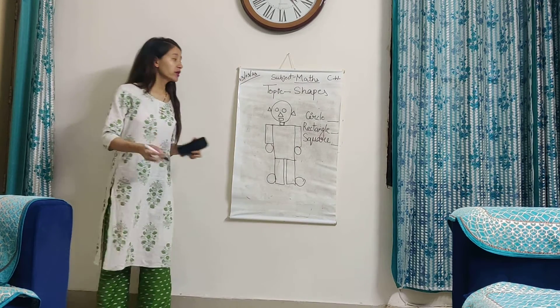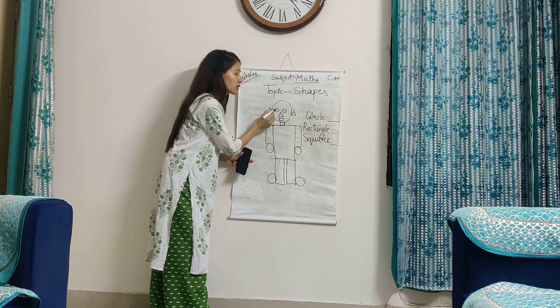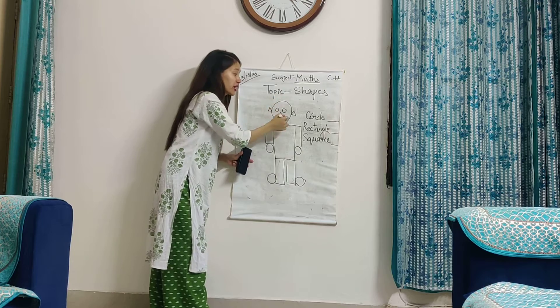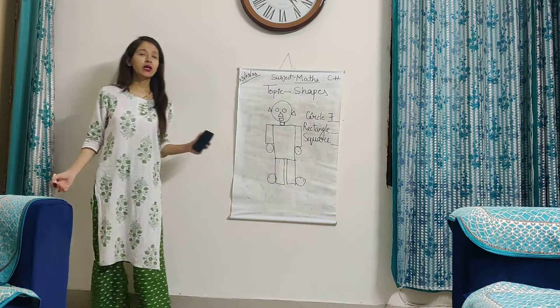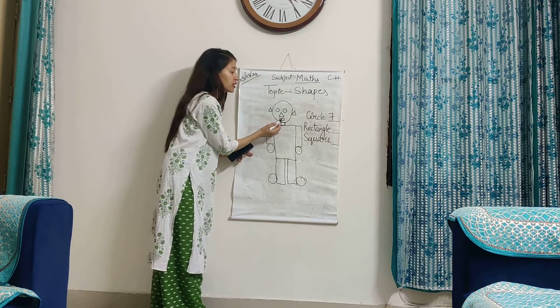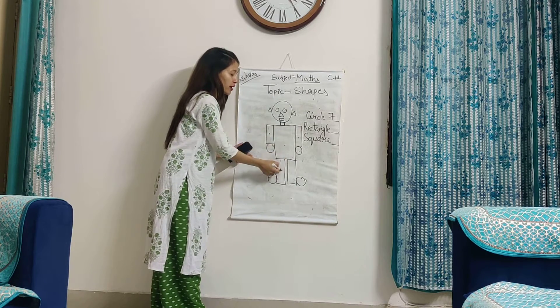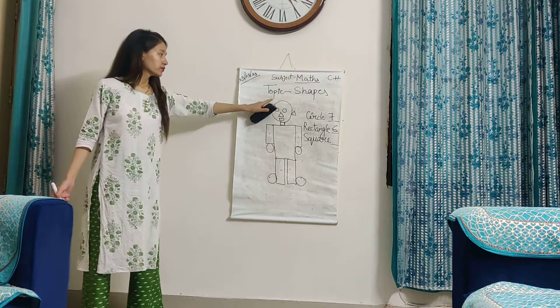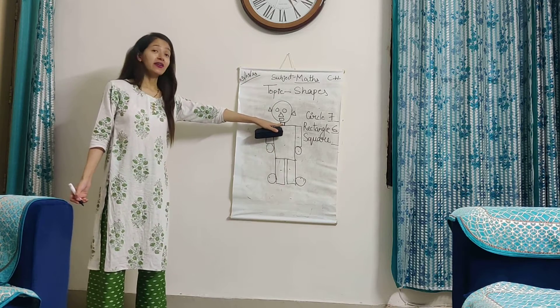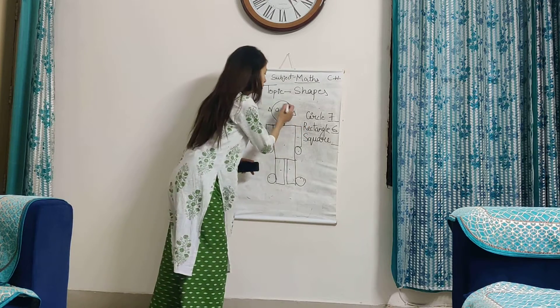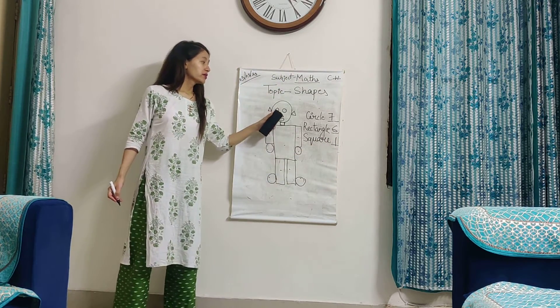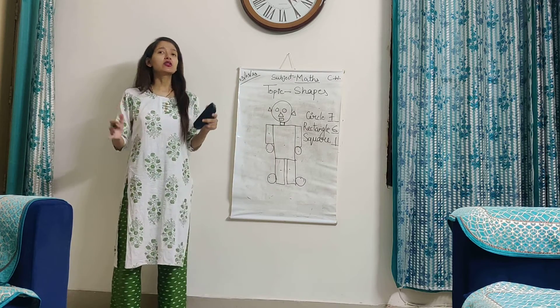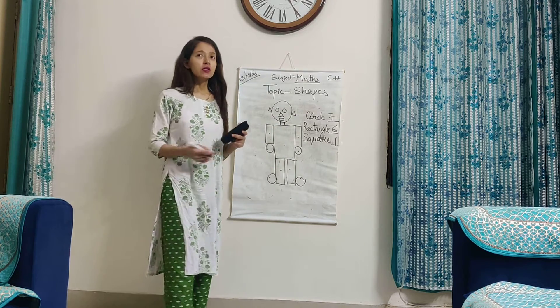I am giving you 10 minutes to complete this task. Now the time is over. How many circles are used to make this puppet? 1, 2, 3, 4, 5, 6, 7 — so 7 circles. Now rectangles: 1, 2, 3, 4, 5, 6 — so 6 rectangles are used. Now square — the neck of this puppet is made of a square, so 1 square is used. This shape is a triangle — we are going to talk about it later. Today we talked about 3 shapes: circle, rectangle, and square.